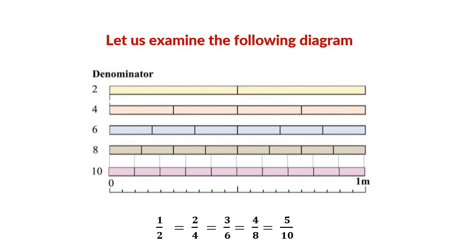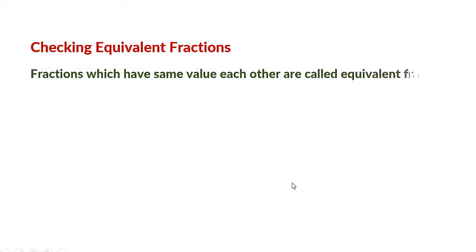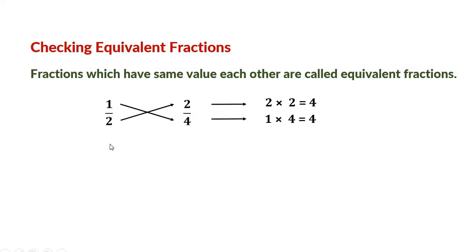These are all equivalent to each other. We can check equivalent fractions by the following way. Fractions which have the same value as each other are called equivalent fractions. Look at these two fractions: 1 half and 2 by 4. We multiply the denominator of the first fraction with the numerator of the second fraction — that is 2 into 2, we get 4. Next, we multiply the numerator of the first fraction with the denominator of the second fraction — that is 1 into 4 equals 4. In both cases the result is the same, so we call these two fractions equivalent to each other.